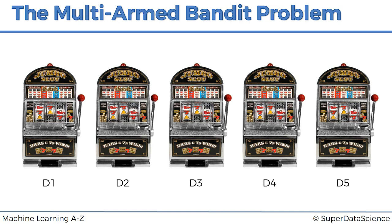We talked about the multi-armed bandit problem in a lot of detail, so if you haven't watched that tutorial, highly recommend jumping into the previous section. Also, understanding the upper confidence bound algorithm will really help you grasp the concepts of Thompson Sampling, so I highly recommend checking that out before proceeding with today's lecture.